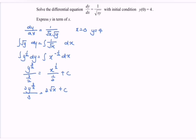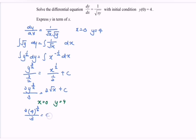To find c, we substitute the initial conditions x equals 0 and y equals 4. So we have 2 times 4 to the power of 3/2 over 3 equals c.